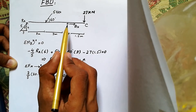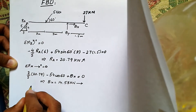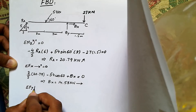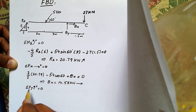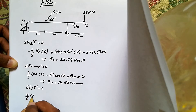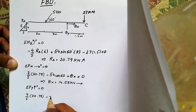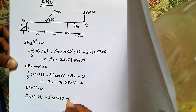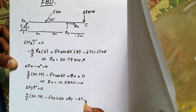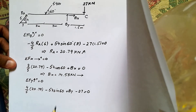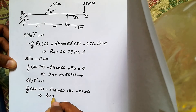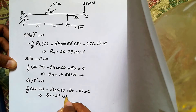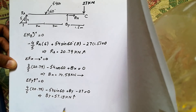Now we have to find By. There are four forces in the y direction. Summation of forces in the y direction, upward positive, equals zero: (4/5) of 20.79 minus 54 sine 60 plus By minus 27 equals zero. Solving, By equals 57.13 kilo Newton in the upward direction.